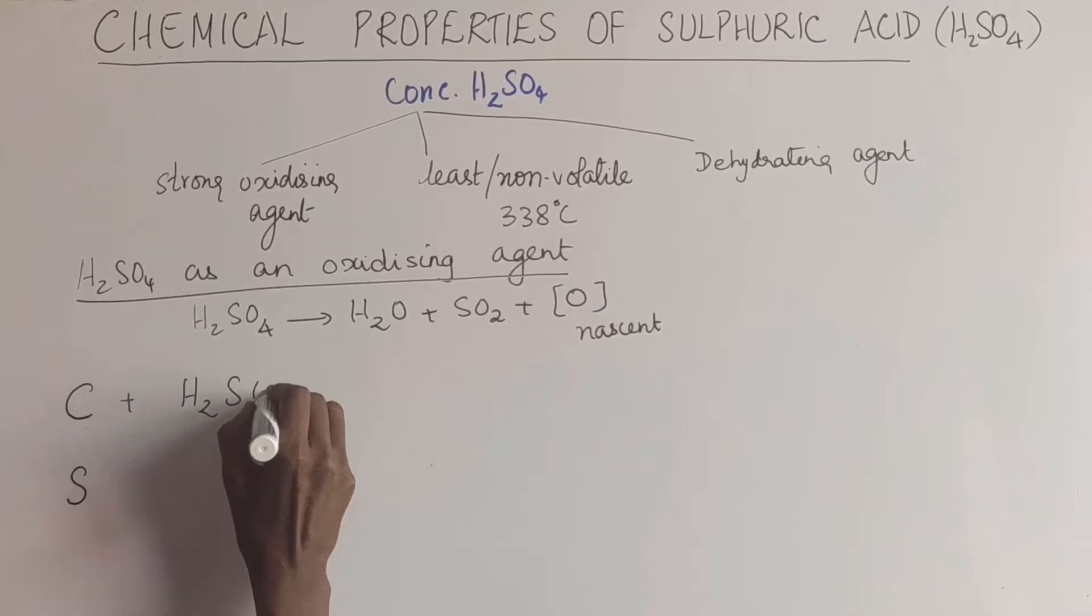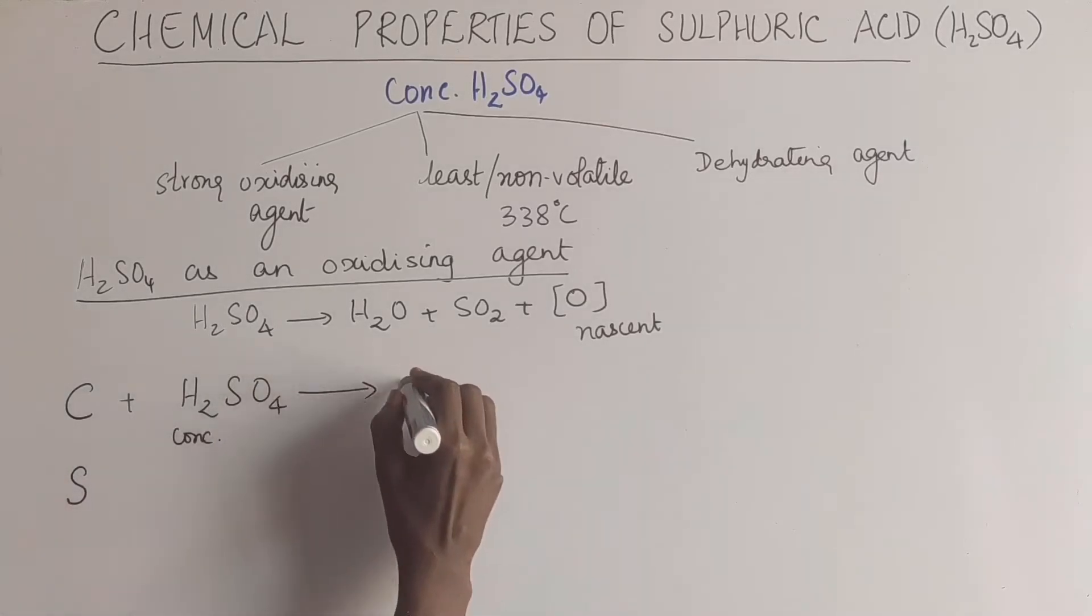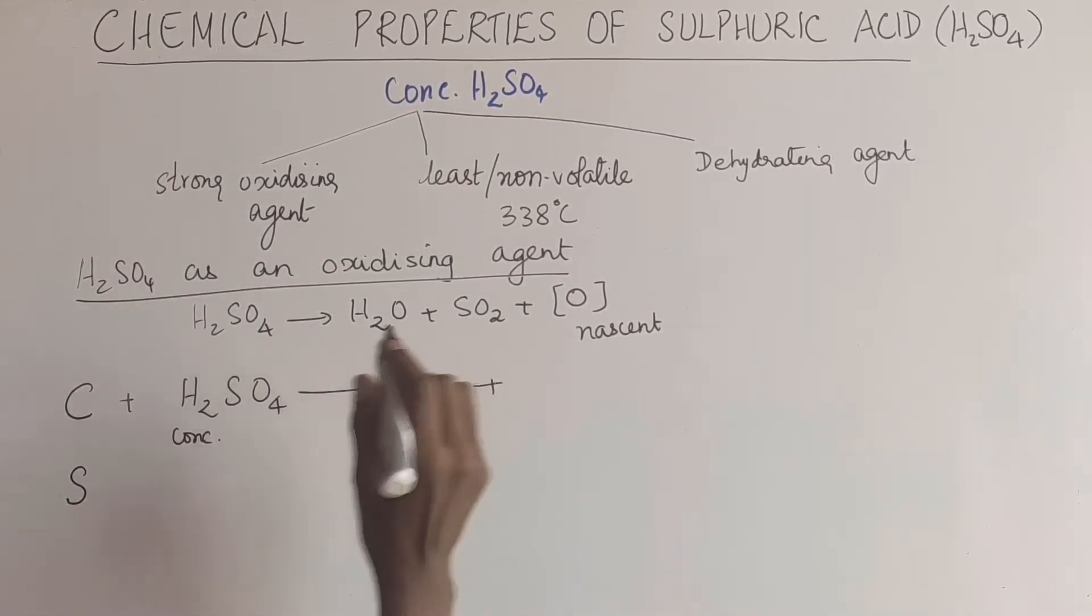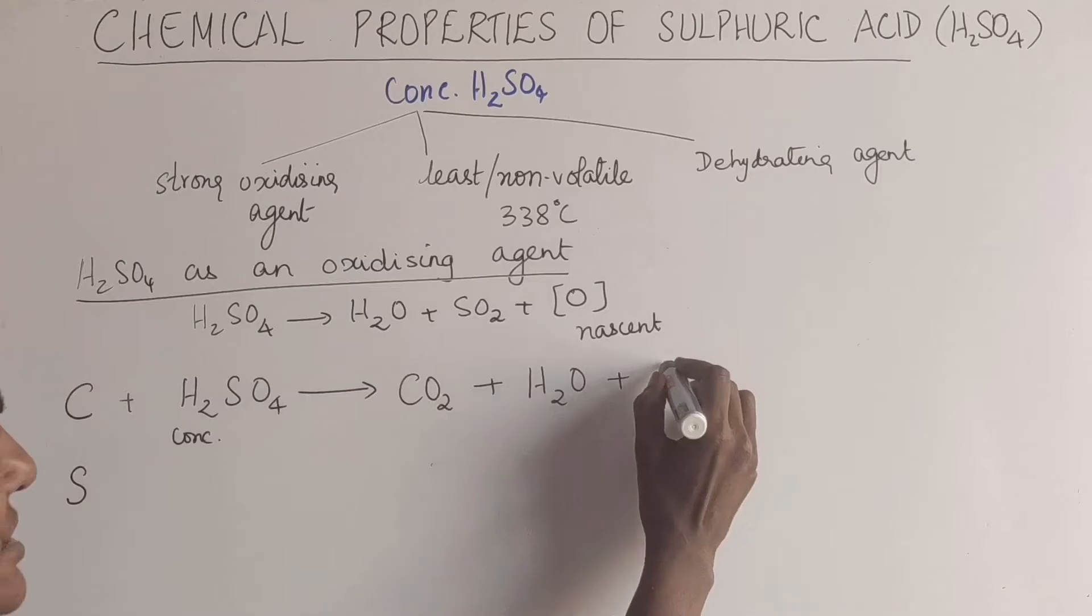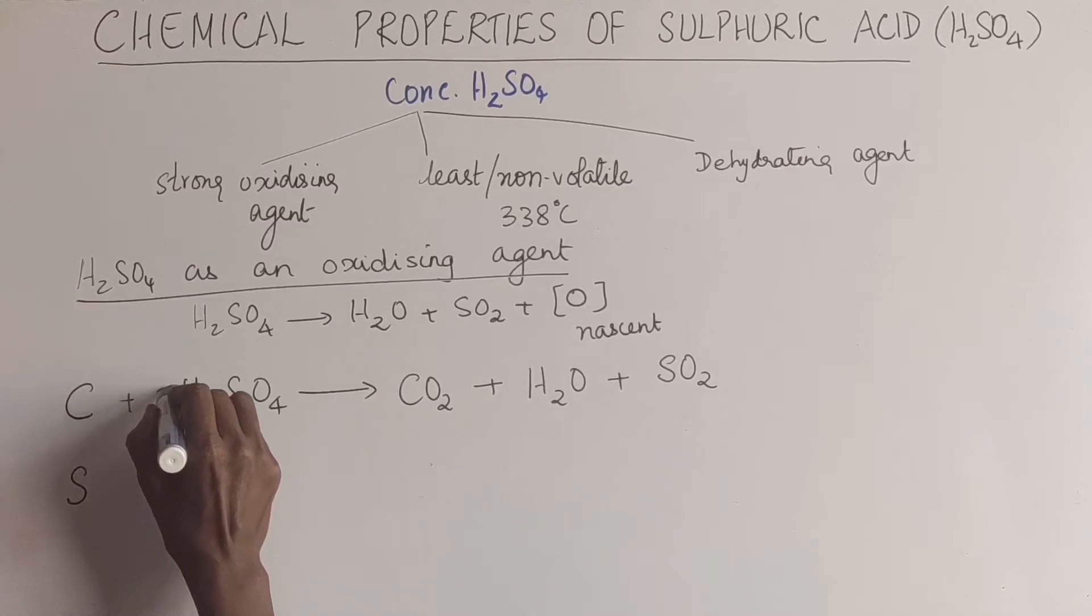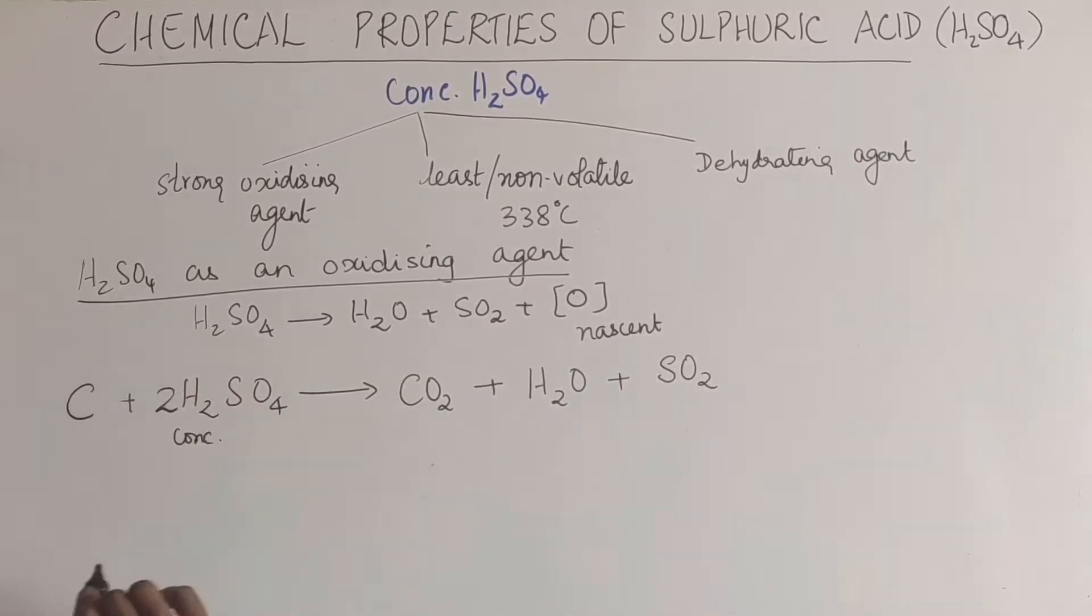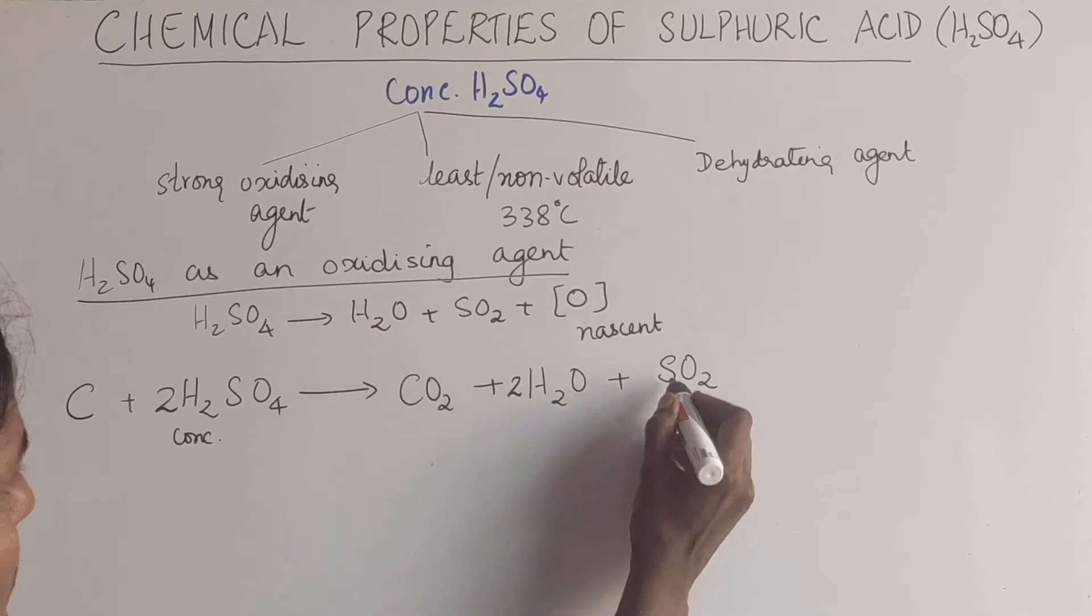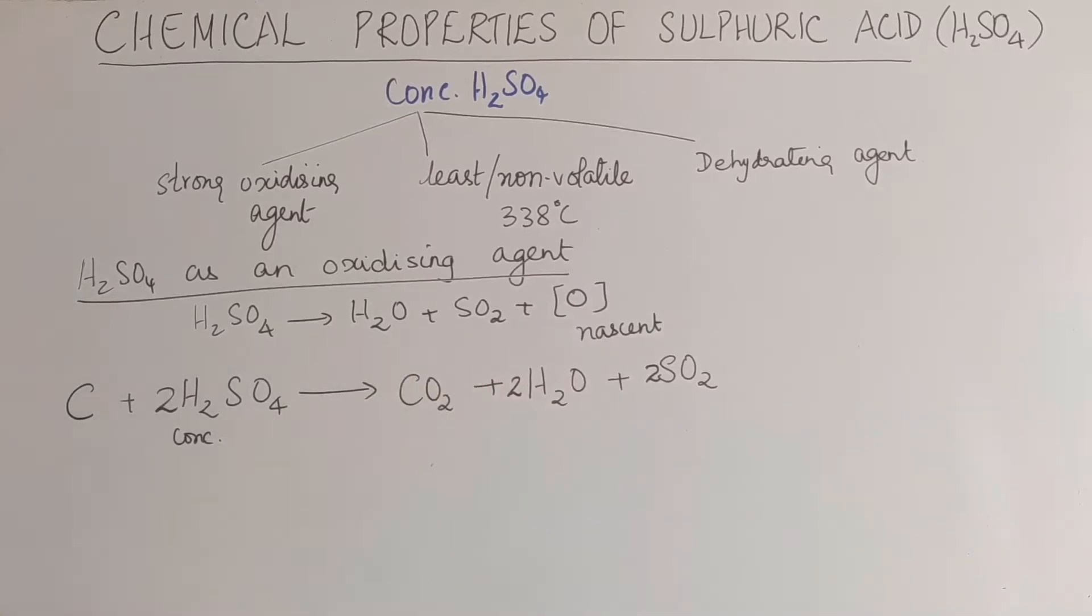So when carbon reacts with concentrated sulfuric acid, carbon will react with oxygen to give carbon dioxide. Hydrogen will be oxidized to water. Sulfuric acid is reduced to sulfur dioxide. So two here which means there will be two, eight, two, six and eight. So this is the reaction that happens when carbon is oxidized by sulfuric acid.